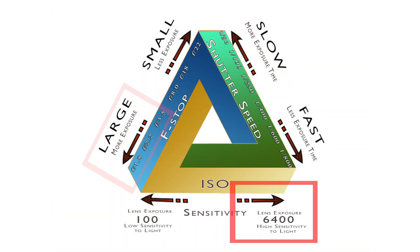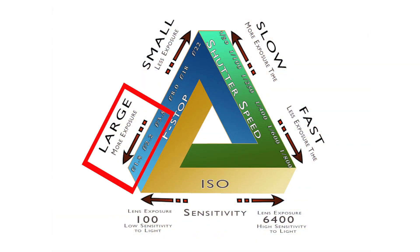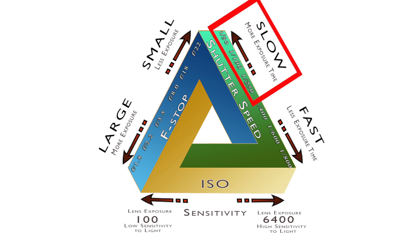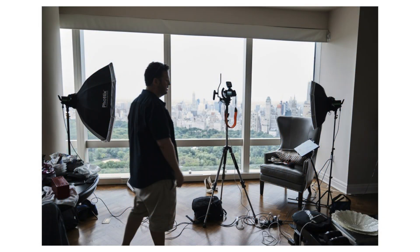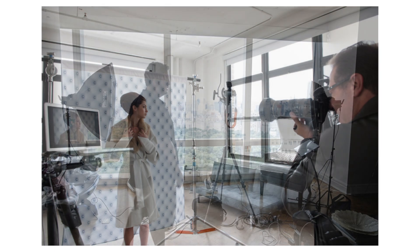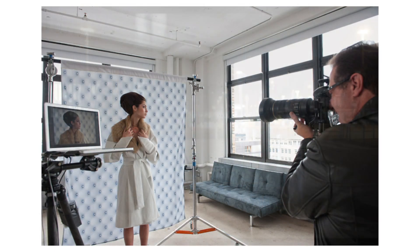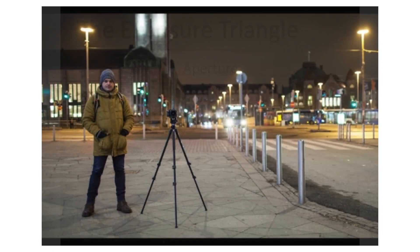When your ISO is maxed out, your aperture is as wide as it can be, and your shutter speed is as low as it can go — where can you go from there? Instead of trying to capture more light that isn't there, you can actually add more light by using artificial lights, or by moving the action closer to better sources of natural light that might exist, like close to a window or under a street light.